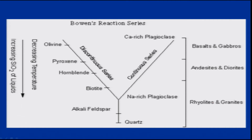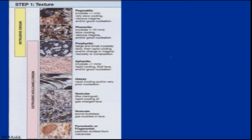As the temperature decreases and silica percentage increases, different types of rocks are formed, comprising different minerals. Another important identification criterion, other than composition, is texture. We have different types of texture, classified mainly based on grain size.